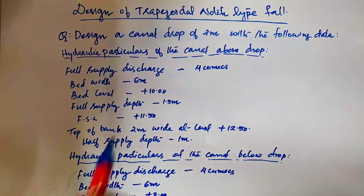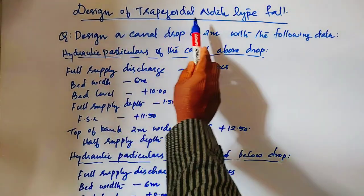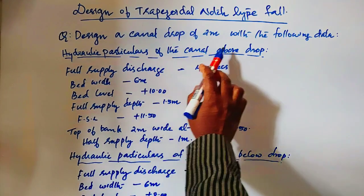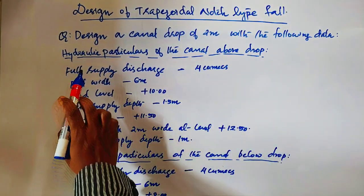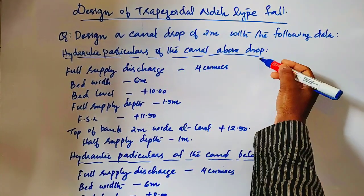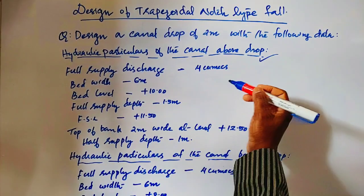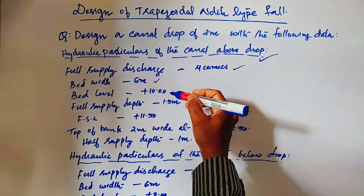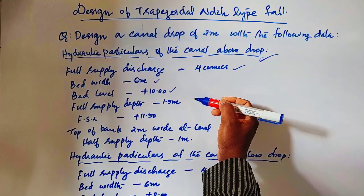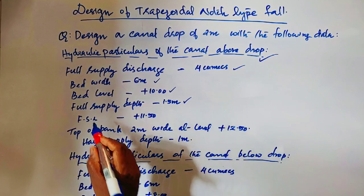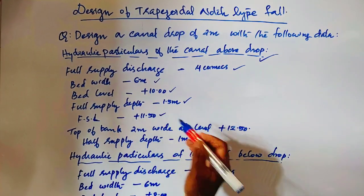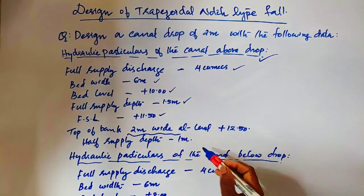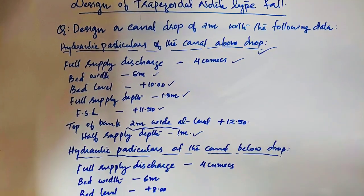Now let's see an example question: Design of trapezoidal notch-type fall. Design a canal drop of 2 meters with the following data. Hydraulic particulars of the canal above the drop: full supply discharge Q_max = 4 m³/s, bed width = 6 m, bed level = +10.00, full supply depth = 1.5 m, FSL = +11.50, top of bank 2 m wide at level 12.50, and half supply depth = 1 m.